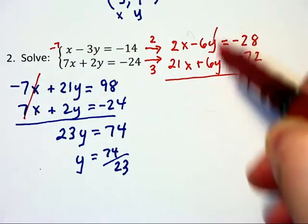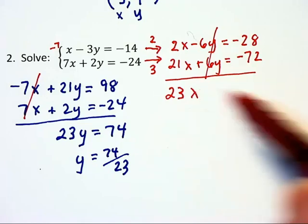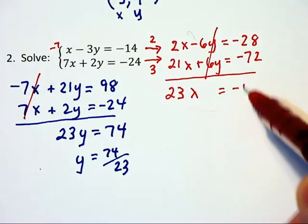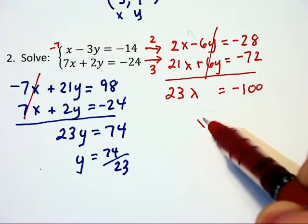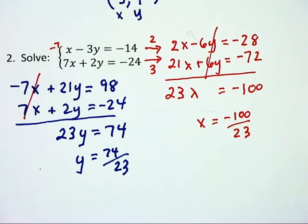And by design we've cancelled out those 6y's and we have 23x is equal to negative 100 and therefore x will equal negative 100 over 23.